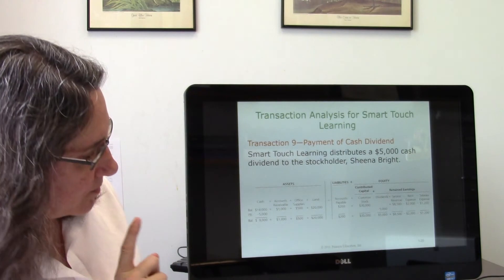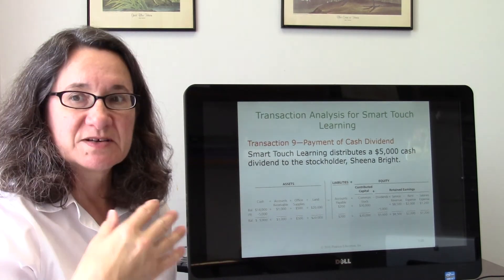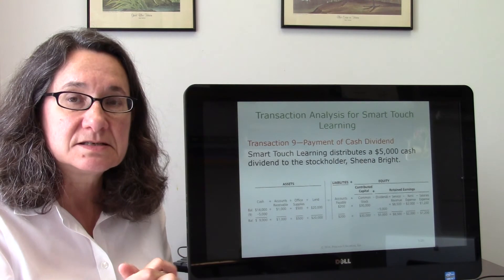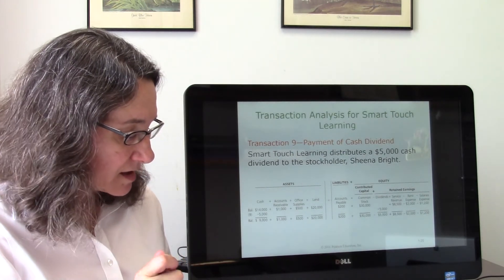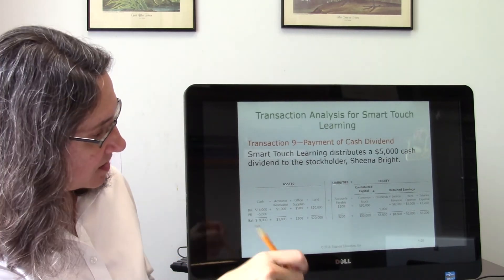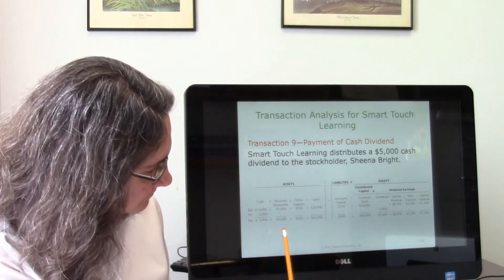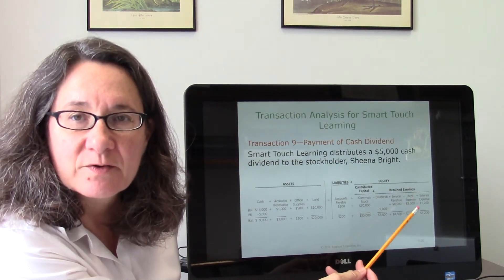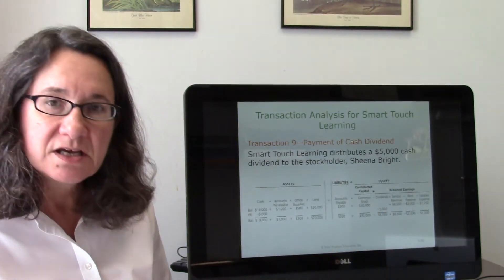In transaction nine, Smart Touch Learning distributes a dividend to Sheena, decreasing both cash and equity. Paying a dividend in cash clearly decreases the asset cash. A dividend is the company giving some equity back to the owner — so paying it out decreases equity. Cash decreases on the asset side and equity decreases on the right side — both go down by the same amount, so the equation still balances.